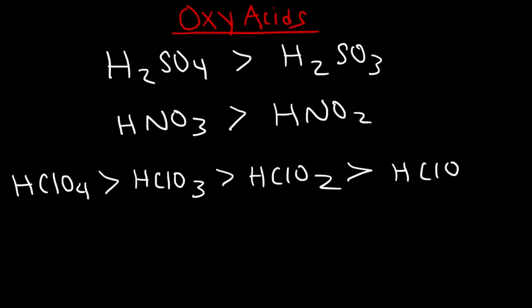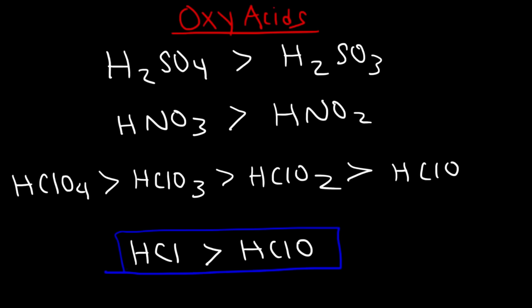HCl is not an oxyacid so it doesn't fit the oxygen-count trend. In fact HCl is more acidic than HClO. The trend only works for acids that actually have oxygen — if an acid doesn't contain oxygen, it won't fit the trend neatly.